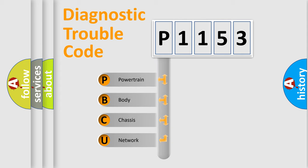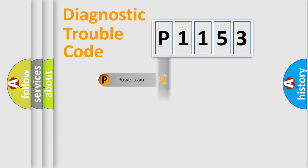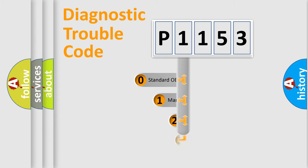We divide the electrical system of the automobile into four basic units: Powertrain, Body, Chassis, and Network. This distribution is defined in the first character of the code.